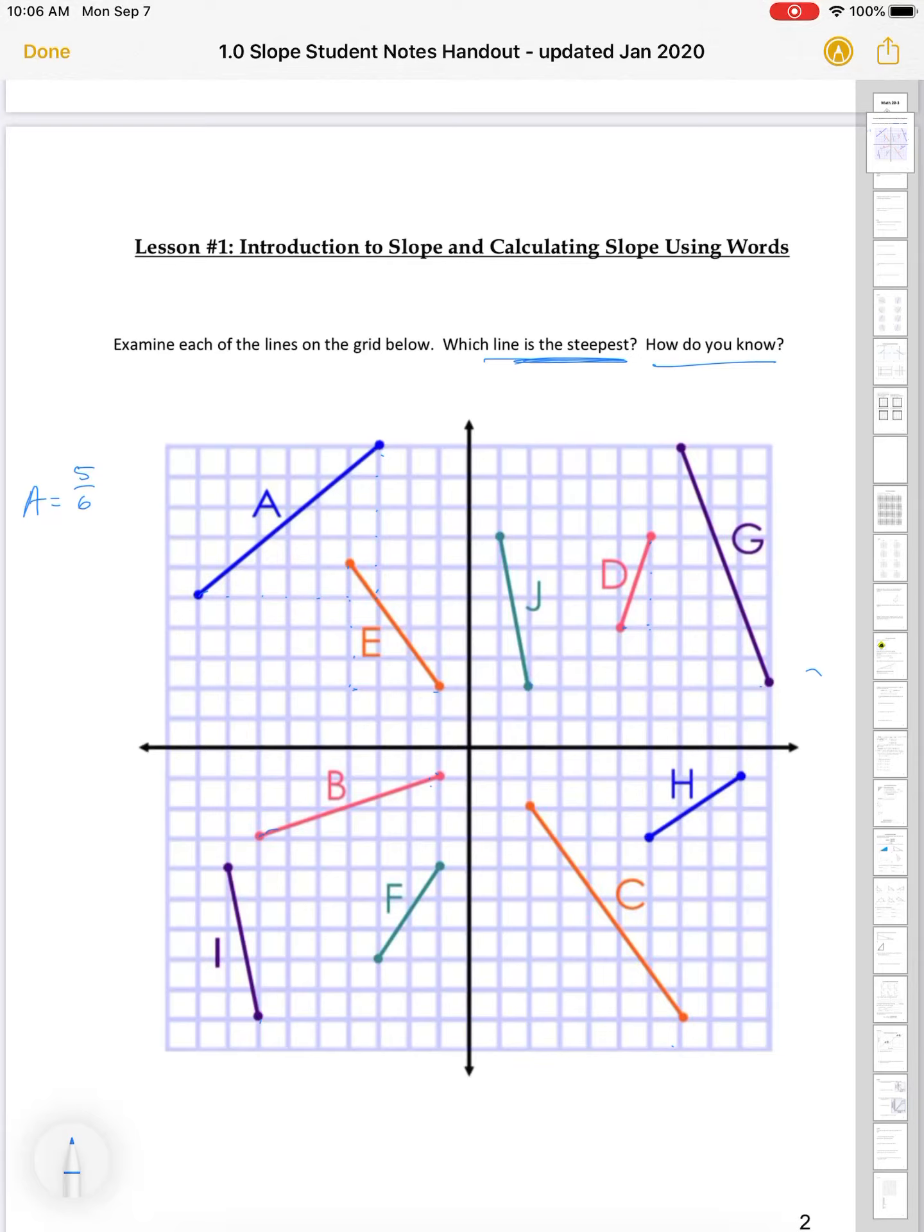We don't know if that's the steepest. Looking at it compared to some of the other lines, I don't think it is the steepest. B, looking at B, we go up 2 over 1, 2, 3, 4, 5, 6. And I can reduce that to 1/3. Again, I think that one's actually a pretty shallow line compared to some of the other ones.